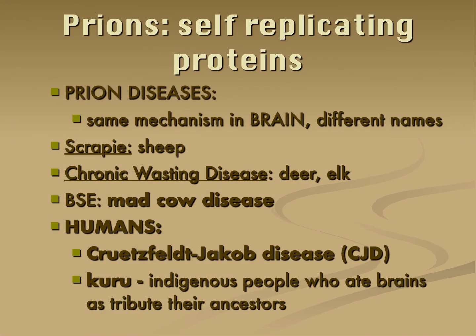Prion diseases all work on the same zombie protein mechanism but get different names. In sheep it's called scrapie. Deer and elk have chronic wasting disease. Then there's mad cow disease, or BSE. In humans, if you get the mutation, it's Creutzfeldt-Jakob disease. And there was an indigenous people in Papua New Guinea who, to mourn the loss of their elders, would consume them — that disease was called Kuru.